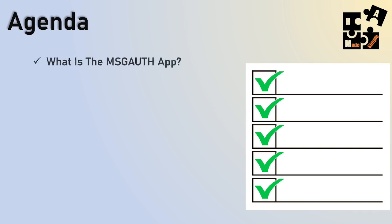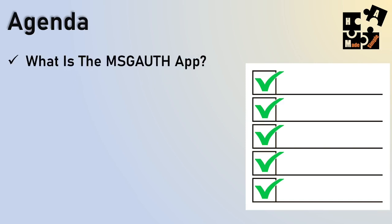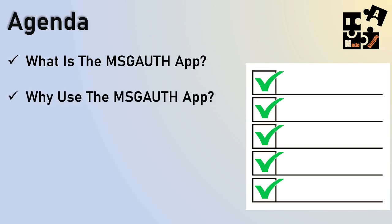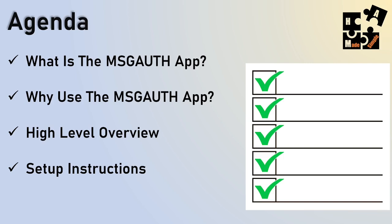Today I'm going to go over what is the message authentication app, why use it, and when do you use it. High level overview and setup instructions. It's pretty simple to set up, except if you're not computer savvy and you don't know where the config file is in the application — you're going to want to watch this because I make it really simple. Anybody who's not computer literate should be able to do the setup pretty easily.